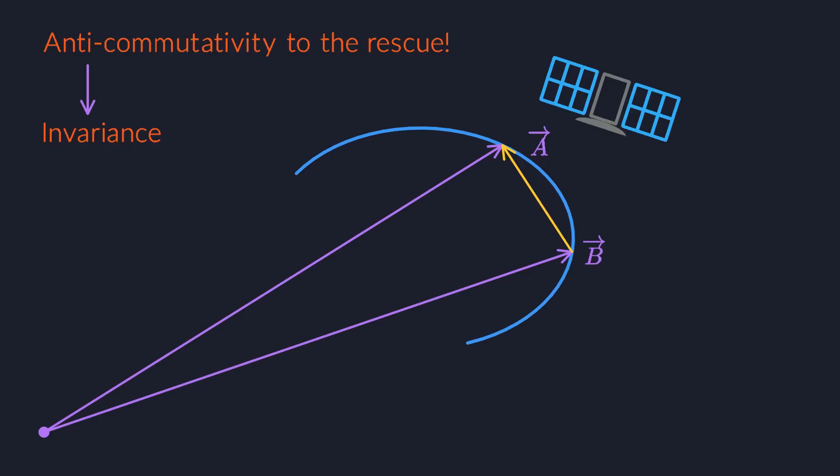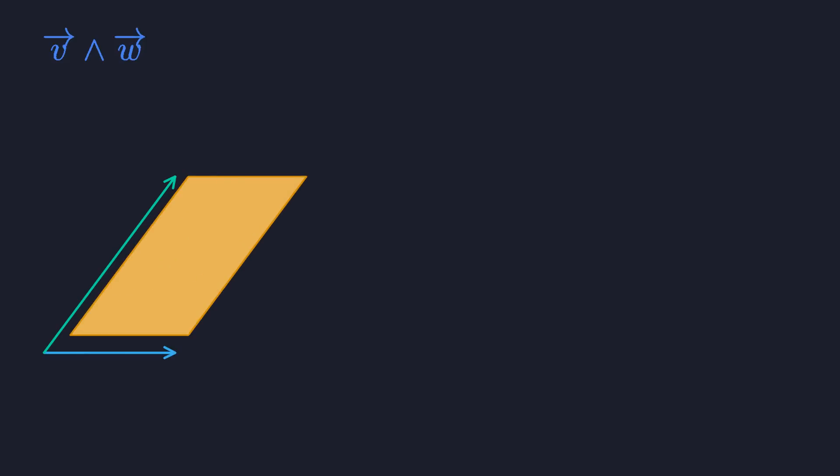Anyway, math is full of anti-commutative things. There is the wedge product between two vectors, which gives you a small piece of flat area. The area is signed, so when you swap the order of the two vectors, the area becomes negative.